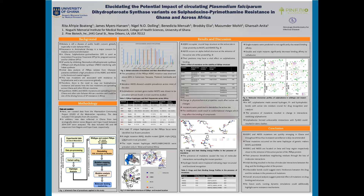In conclusion, alanine 581 glycine and alanine 613 serine mutations are gradually spreading across Ghana and other sub-Saharan African countries by co-occurring on the same haplotype with known Plasmodium falciparum DHPS resistance markers, and hence increased surveillance is duly recommended. Structural analysis suggests potential effects of the mutations on drug binding and structural function. As future work, running molecular dynamics simulations could further highlight resistance mechanisms and serve as a foundation for the discovery of better drugs for malaria treatment. Thank you for listening.